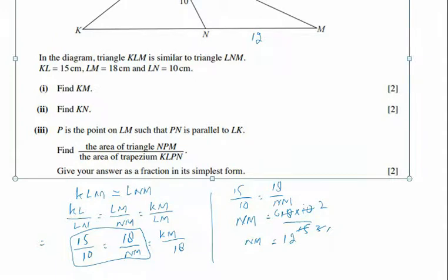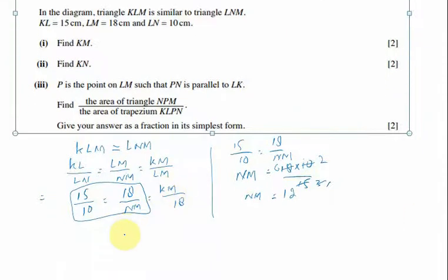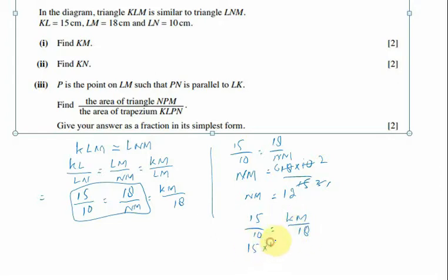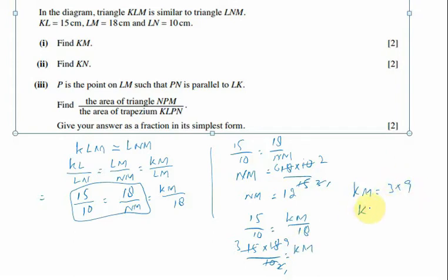Now to find KM: 15 upon 10 equals KM upon 18, so KM equals 15 multiplied by 18 divided by 10. Simplifying: 5 into 15 gives 3, 5 into 10 gives 2, and 2 into 18 gives 9. So KM equals 3 multiplied by 9, which is 27 centimeters.